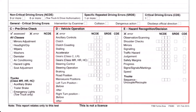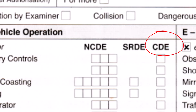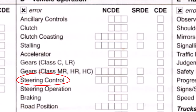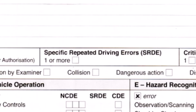In front of each criterion there are three columns: non-critical driving error (with multiple boxes), specific repeated driving error (SRDE), and critical driving error. For example, with steering control: if your steering is shaky on a left turn, that's one minor mark. A second shaky turn adds another. After five minor marks, a sixth mistake moves to the SRDE column — meaning the driver constantly repeats that error. Any tick in the SRDE column is an instant fail, and the SRDE one-or-more box gets ticked accordingly.